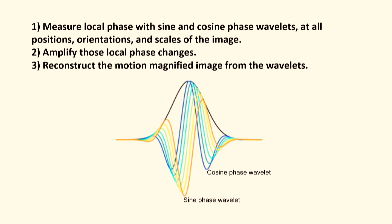If you have a pair of those wavelets — a sine phase and a cosine phase — the change in the ratio of the sine to the cosine phase tells you about perhaps a very small motion that's going on at that location, orientation, and scale.